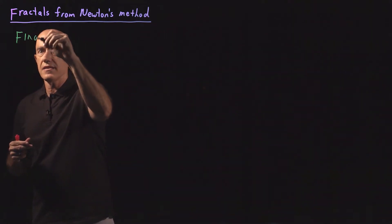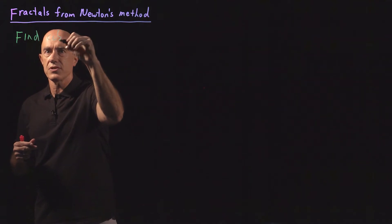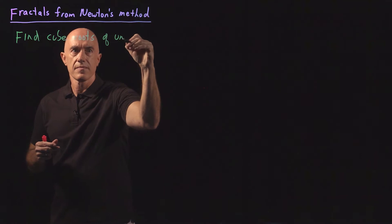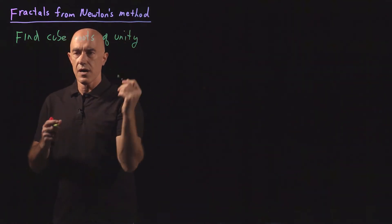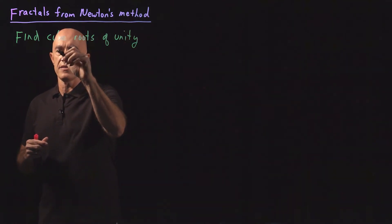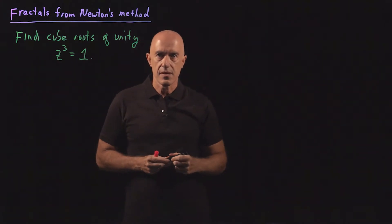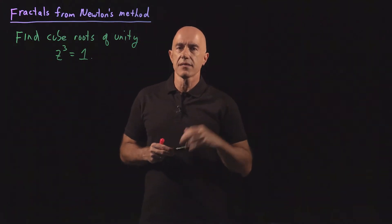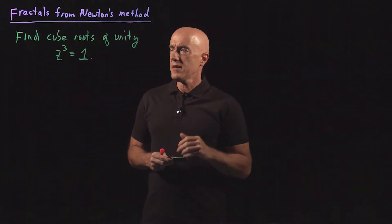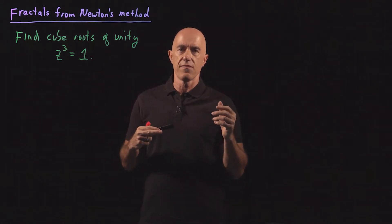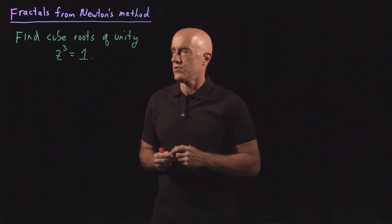That's to use Newton's method to find the cube roots of unity. So a cube root of unity is a solution to the equation z cubed equals 1. We're talking about complex numbers here, so it's good to have a representation of where the cube roots of unity are.